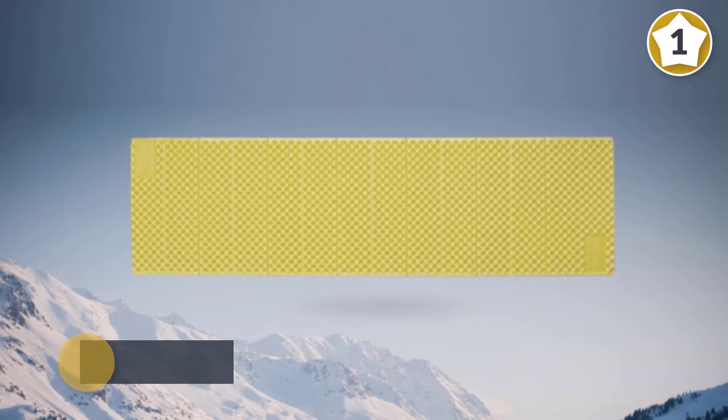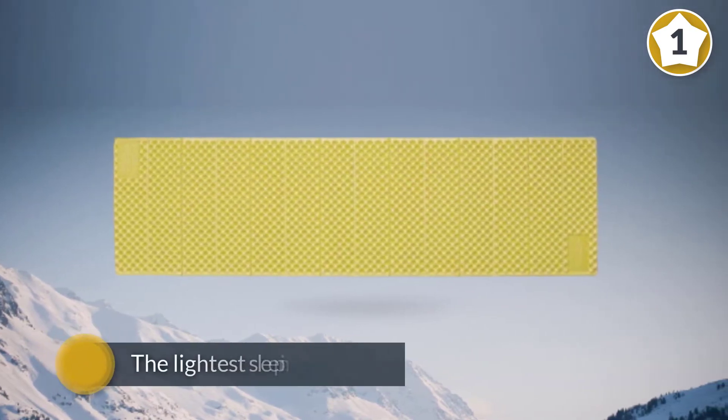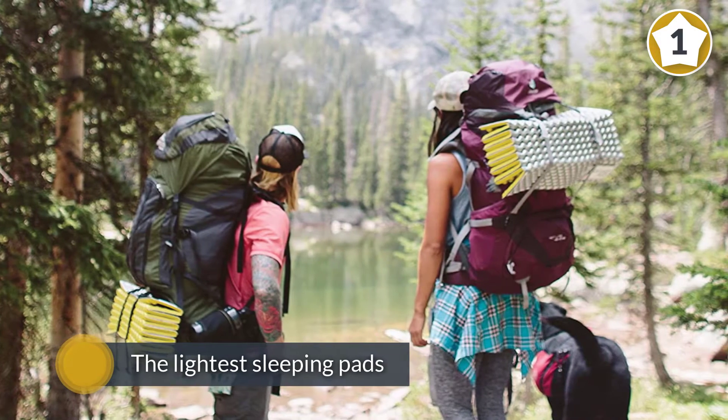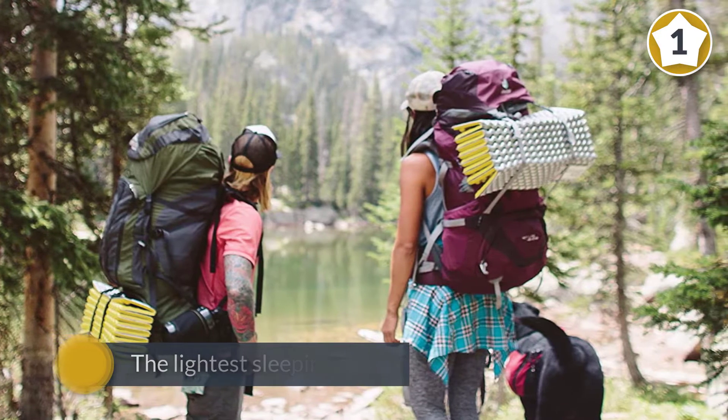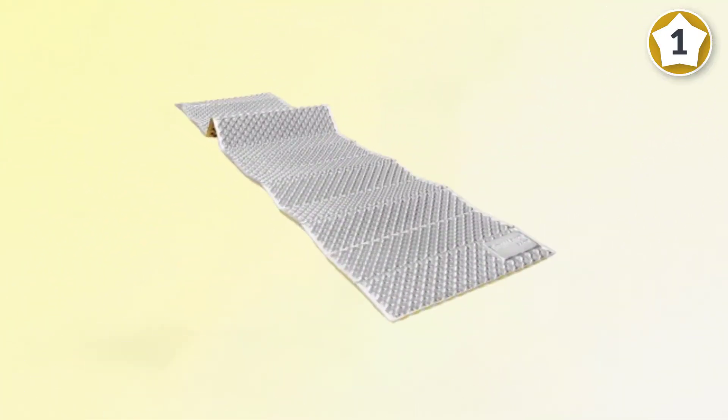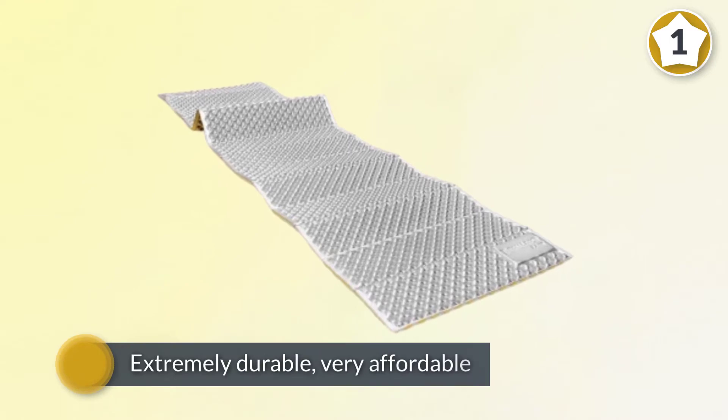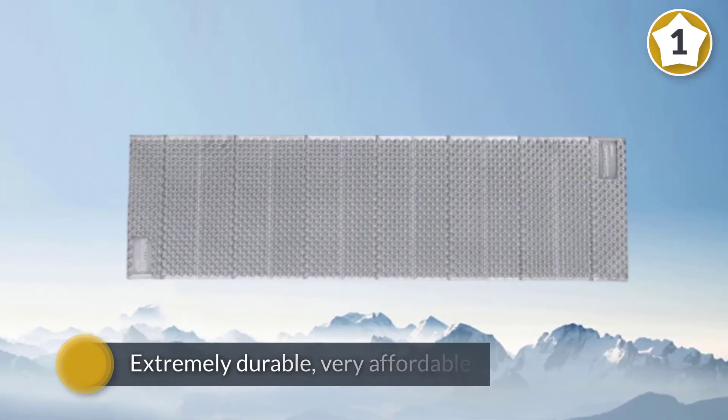At only 14 ounces, it's also one of the lightest sleeping pads out there. If you're on a tight budget, the Therm-Arest Z-Lite Sol delivers a lot of warmth for your money. Extremely durable, very affordable, easy to use, doubles as a camp seat.